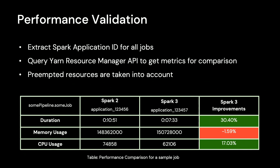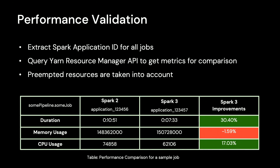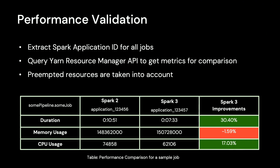Now let's shift our focus to performance validation. We first extract the Spark application IDs for all jobs in both pipelines, and then query the YARN resource manager to gather metrics for comparison. We compare job duration, memory usage, and CPU usage to ensure there's no significant performance degradation. We also take preempted resources into account, as preemption is pretty common in Spark. And that wraps up our discussion on the migration framework. I will now hand back to Jason to talk about various issues encountered and lessons learned throughout the migration process.